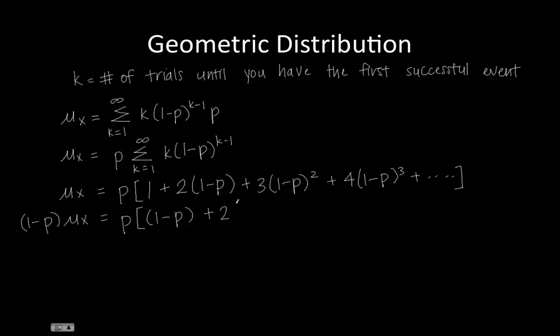P times 1 minus P times 1 is equal to 1 minus P plus 2 times 1 minus P squared plus 3 times 1 minus P to the power of 3, and so on.